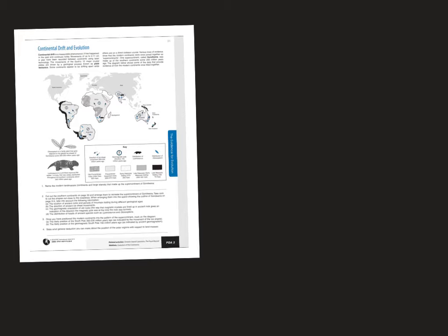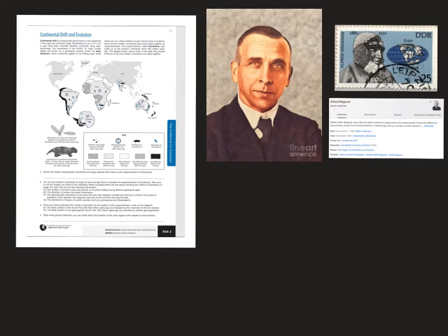To talk about continental drift, we have to talk about someone named Alfred Wegener. He was a polar researcher studying the polar environment at a time when going to the poles, north and south, was heroic. They were the places where adventurers went.